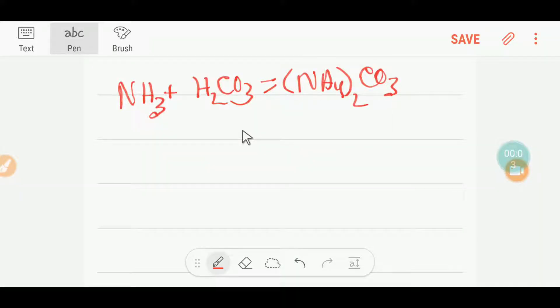Welcome to Chemistry Tutorial 360. Today we're going to balance this equation. This is ammonia, this is carbonic acid, and this is ammonium carbonate, which is a salt. To balance this equation, I can draw a table.